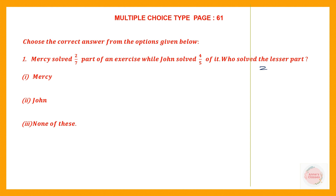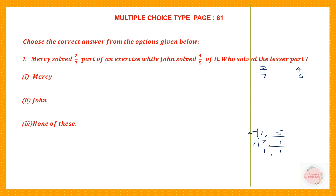Let's compare 2/7 and 4/5. When we compare, remember if they are unlike fractions — unlike because the denominators are different — we have to make the denominators the same. That means we have to find the LCM of the denominators. So let's find the LCM of 7 and 5. We write 7 as it is, 5 ones are 5.